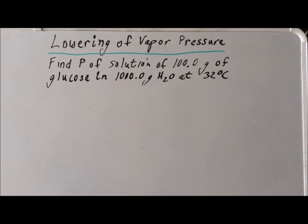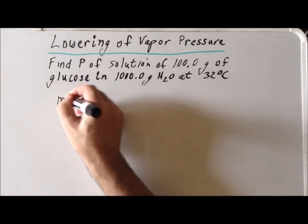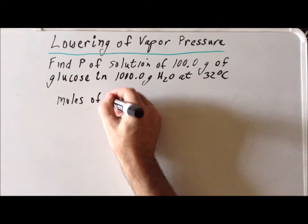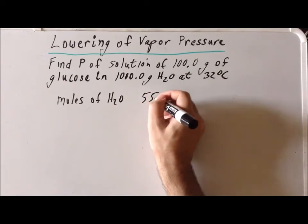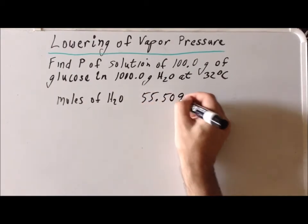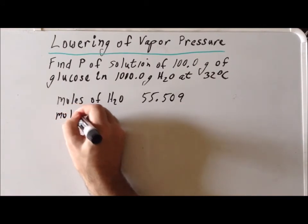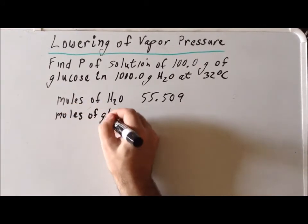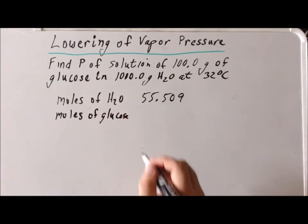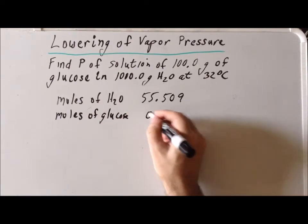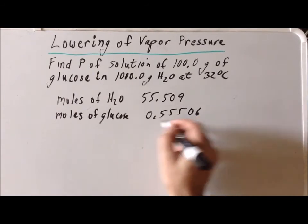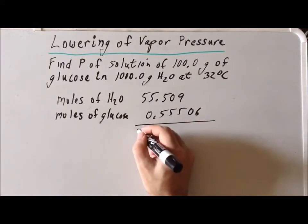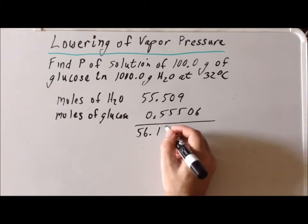To determine the mole fraction of water, we need to find the total number of moles. The moles of H2O in this particular case is 55.509. The moles of glucose equals 0.55506. We get a total number of moles of 56.164.